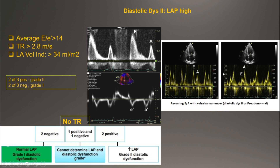If Valsalva is not performed or is inconclusive, we check the three other parameters. If two are positive — grade 2; if two are negative — grade 1. If TR is absent, we check the other two factors: two positive = grade 2, two negative = grade 1. If one is negative and one positive, we check additional parameters including the S to D ratio.